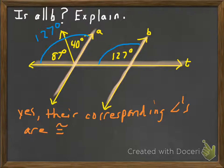Our conclusion is yes, the two lines are parallel, and the reason is that their corresponding angles are congruent. Let's summarize the ways we're going to prove that two lines are parallel using the various types of angle pairs we've learned in this chapter so far.